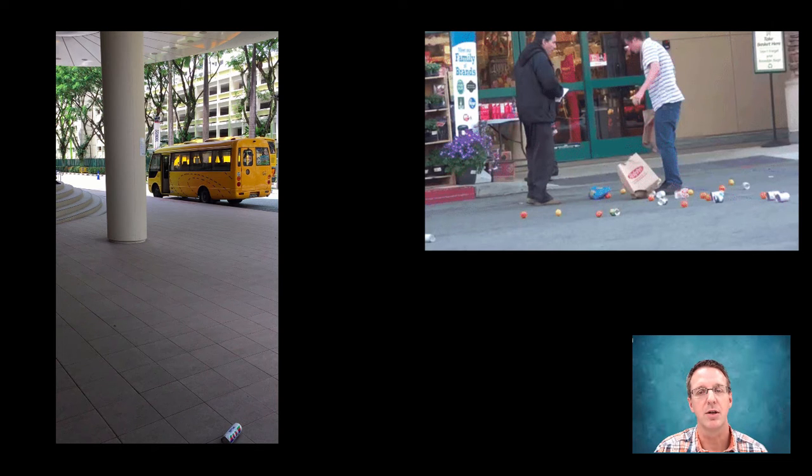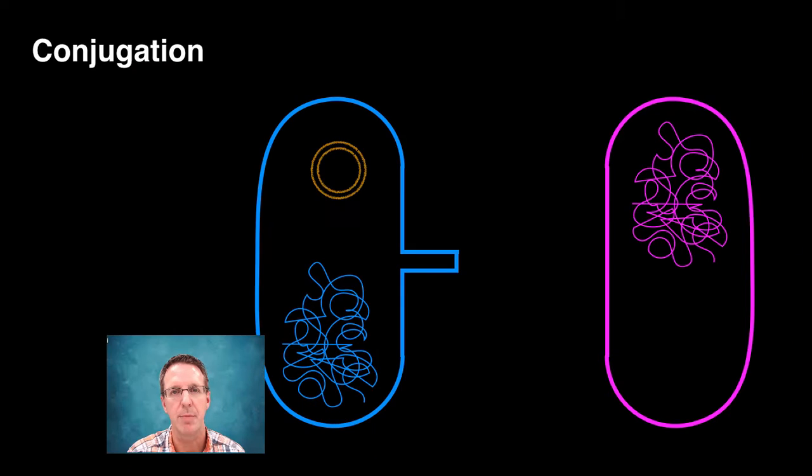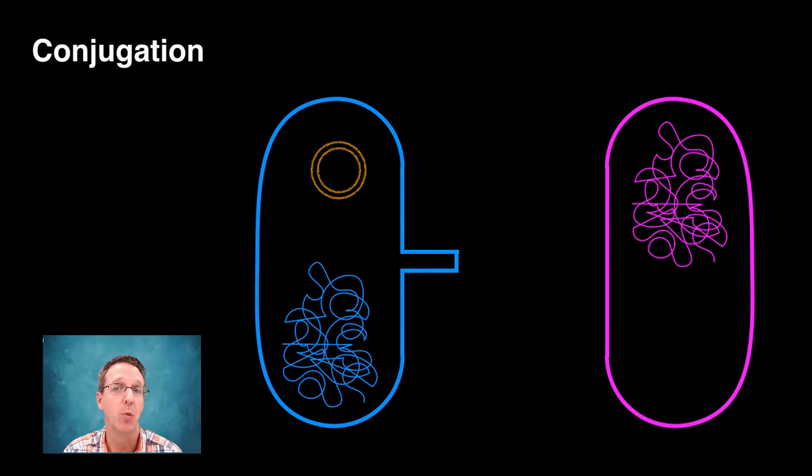Now, it is time to talk sex, bacterial sex, and yes, that is a thing, and it is called conjugation. In order for this to happen, you need to have both a boy bacteria and a girl bacteria, and again, that is a real thing.